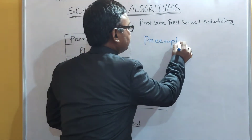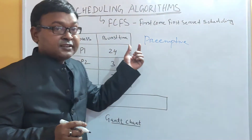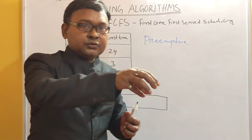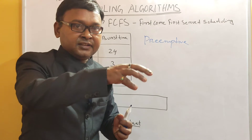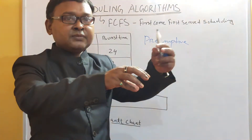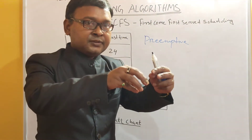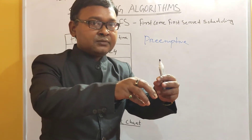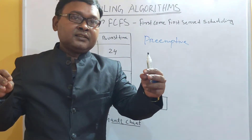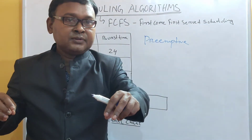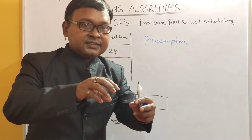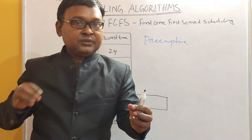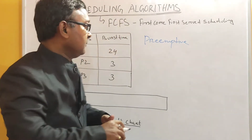What do you mean by preemptive? One scheduling algorithm is called a preemptive scheduling algorithm. For example, one process enters into the processor and starts execution, and some high priority process also wants to enter. The operating system will tell the low priority process to come out without completing its full execution time. That is called preemptive.